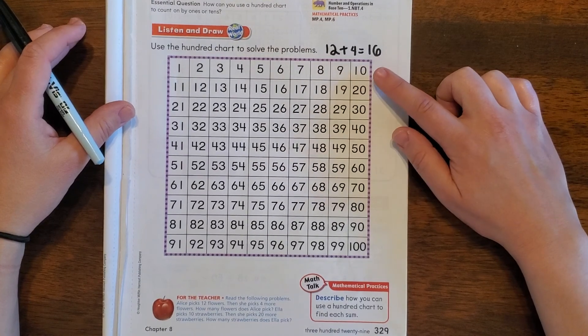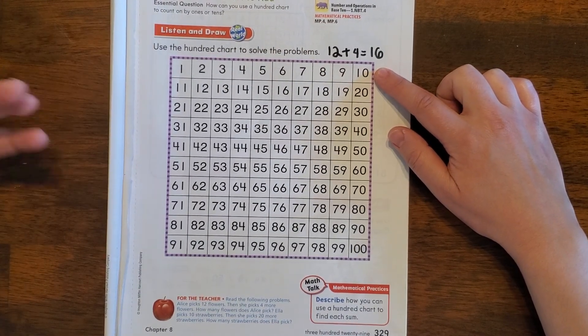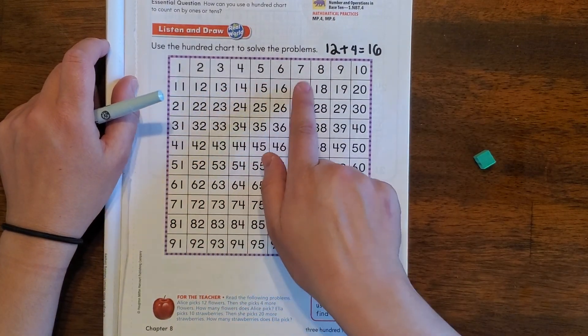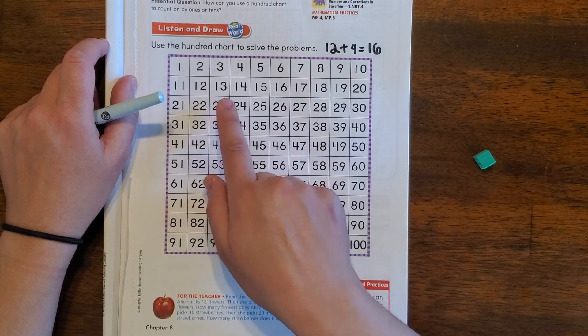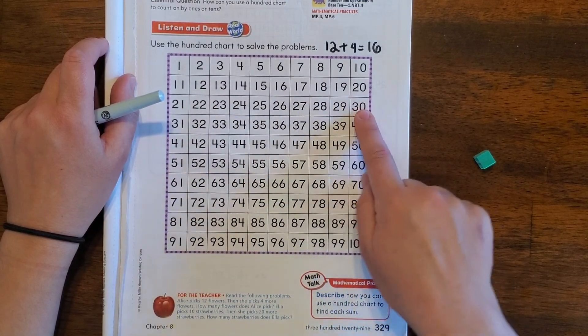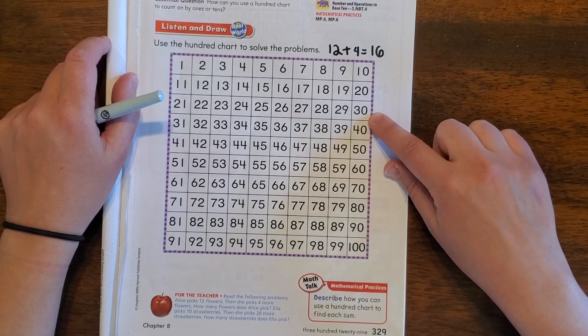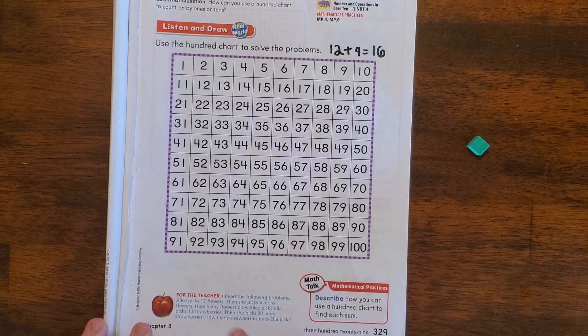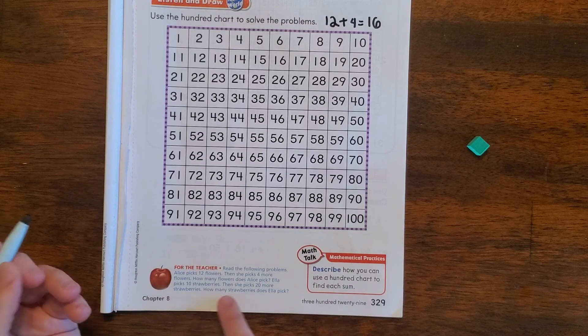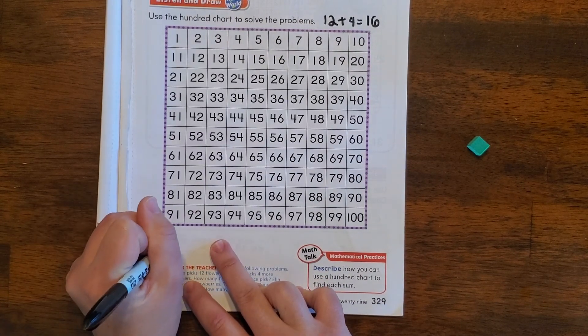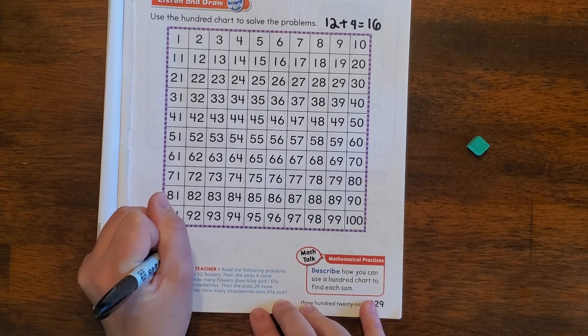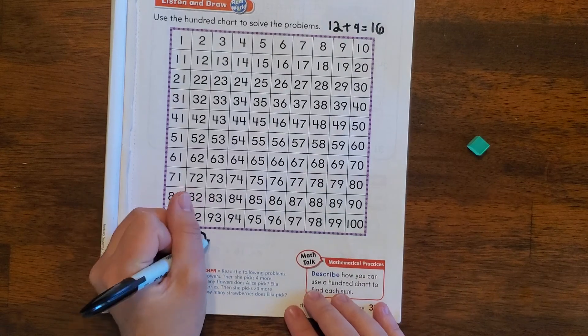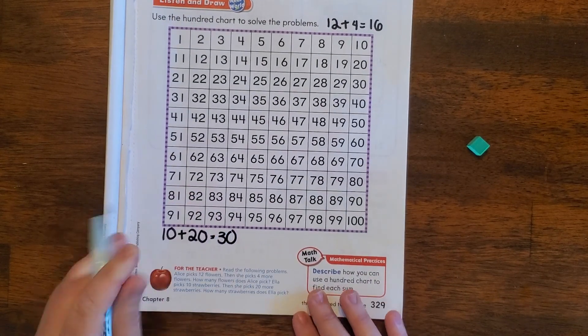But let's count by ones just to be sure. So if we start here at 10 and then she will pick 20 more strawberries: 1, 2, 3, 4, 5, 6, 7, 8, 9, 10, 11, 12, 13, 14, 15, 16, 17, 18, 19, 20. So yeah, if she picks 20 more strawberries, she's going to end up with 30 all together. I'm going to do that addition sentence for Ella right down here. She had 10 strawberries, then she picked 20 more, and we ended up on 30 strawberries total.